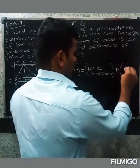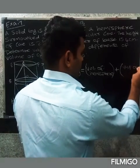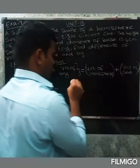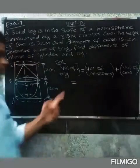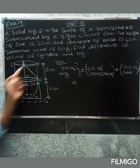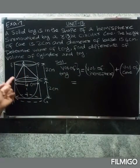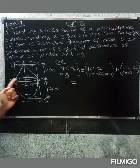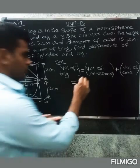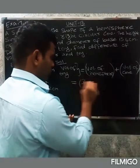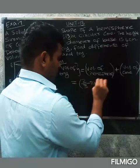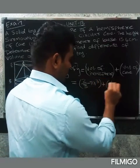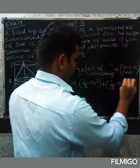Volume of tie = volume of hemisphere plus volume of cone. Using the formula: 2/3 π r³ plus 1/3 π r² h.